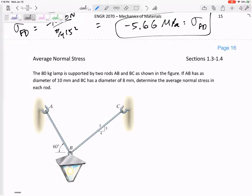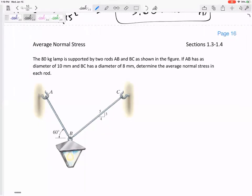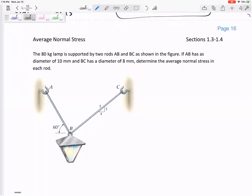And so remember, you cannot forget statics. You might have to do some statics. So how about this? 80-kilogram lamp supported by two rods. If AB has a diameter of 10 millimeters, BC has a diameter of 8 millimeters, determine the average normal stress in each rod. So you still have to do statics and say, okay, I've got 80 times 9.81.